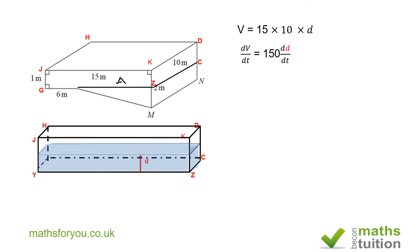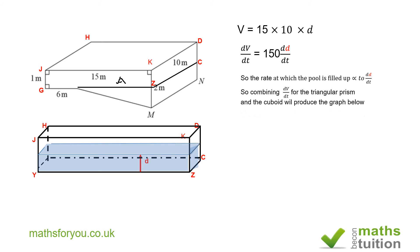The swimming pool is being filled at a constant rate of 50 liters per minute, which is 1/20 meters cubed per minute. For Section A, the rate at which the pool is filled is proportional to the change in depth dd/dt. Now combining Section A (the cuboid) and Section B (the triangular prism), the swimming pool is made up of both of these parts.